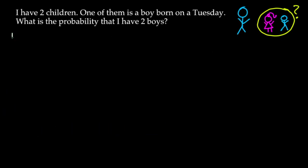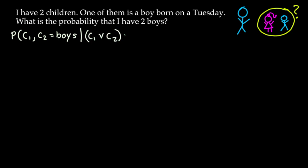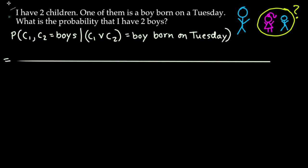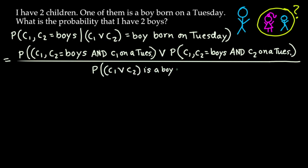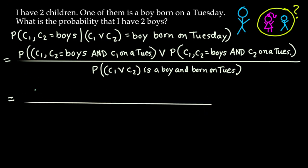Now we go through this using conditional probability rules. In set notation: P(C1 and C2 are boys | C1 or C2 is a boy born on Tuesday). Using the formula, the numerator is P(C1 and C2 are boys and C1 is born on Tuesday) plus P(C1 and C2 are boys and C2 is born on Tuesday), and the denominator is P(C1 or C2 is a boy born on Tuesday). For the 'or' statements, we add probabilities and subtract the joint to avoid double counting.